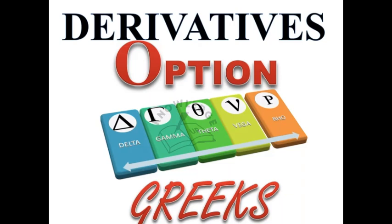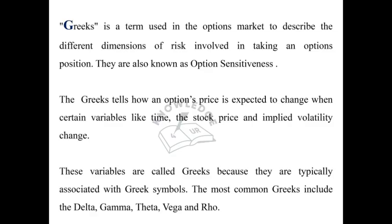Welcome to another session on derivatives. Today we will look into the option Greeks. Greeks is a term used in the options market to describe the different dimensions of risk involved in taking an options position. They are also known as option sensitivities. These variables are called Greeks because they are typically associated with Greek symbols.